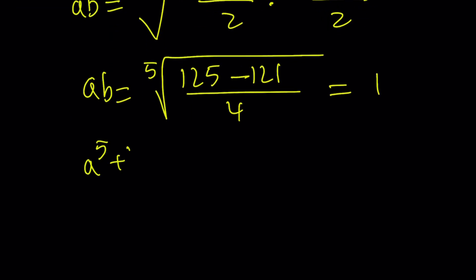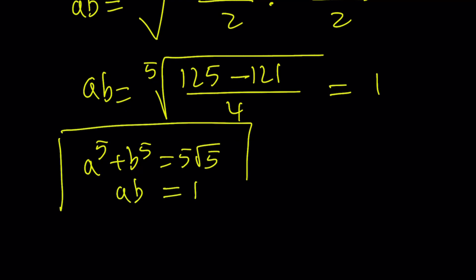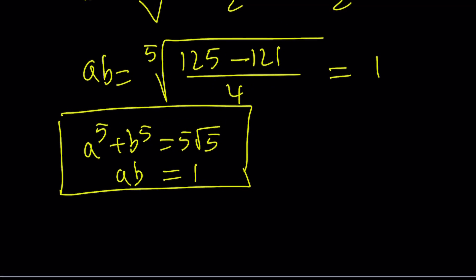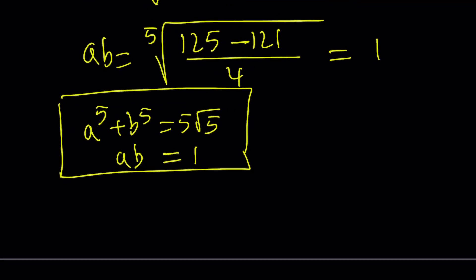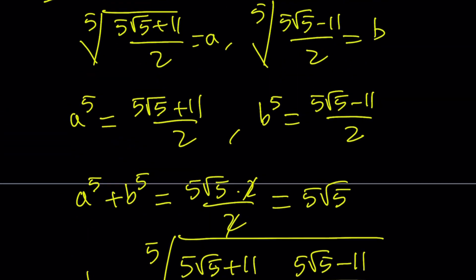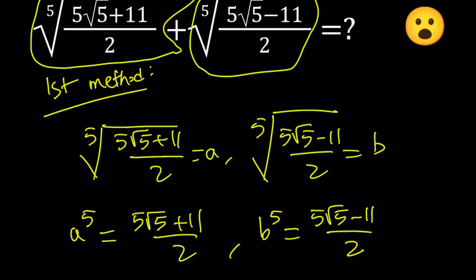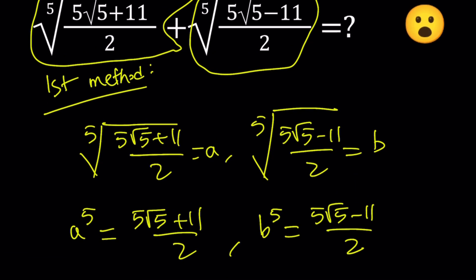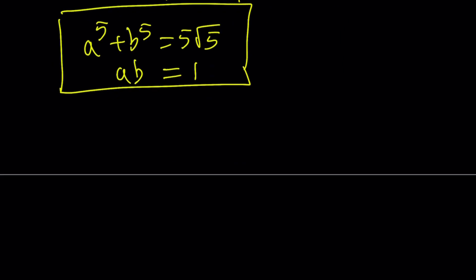So we've got a really nice system: a⁵ + b⁵ = 5√5, and a·b = 1. Now, what are we trying to find? Let's call that x, so the whole thing a + b = x. What I'm going to do is raise both sides of this to the fifth power.